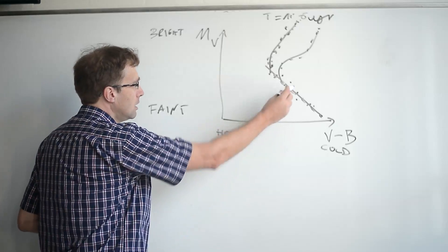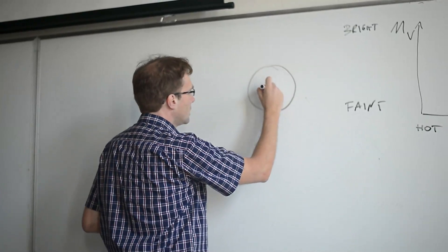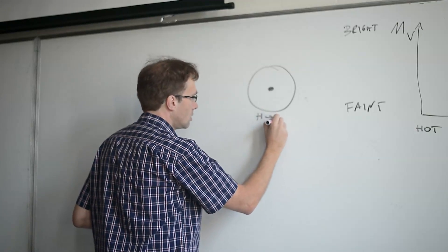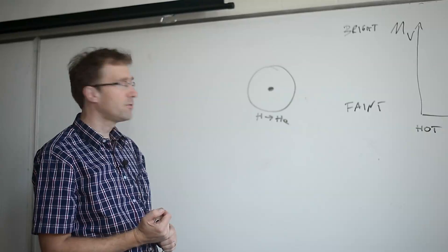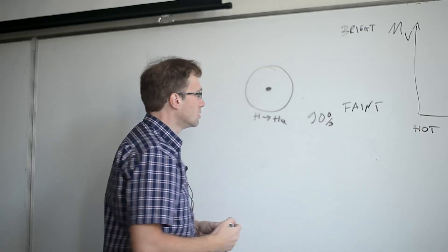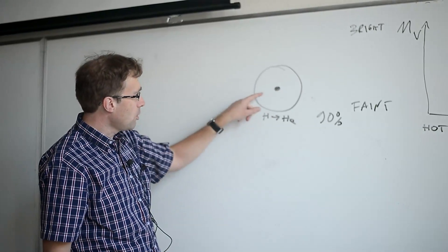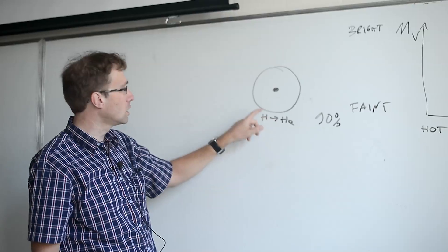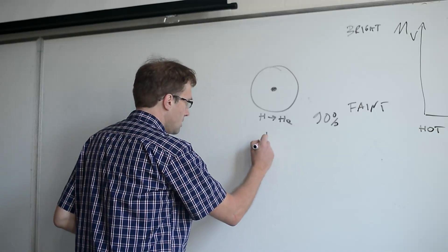If you look at a main sequence star, the structure has an outer part and a core. As long as the star is on the main sequence, it will always burn hydrogen in its core to helium. This is the so-called main sequence phase of stellar evolution, and that phase lasts for about 90% of the lifetime of a star. The star will just burn hydrogen into helium in its core. However, at some point basically all the hydrogen in the core has been turned into helium — and so that means the star has run out of fuel in the core.